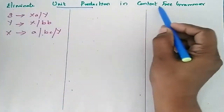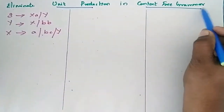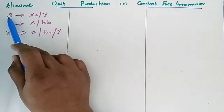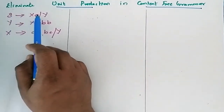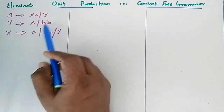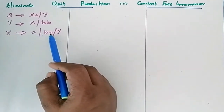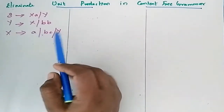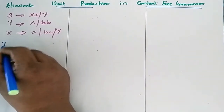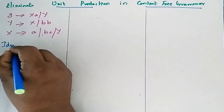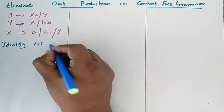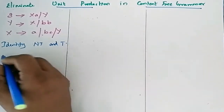Eliminate unit production in context-free grammar where the production rule is: S determines XA or Y, Y determines X or BB, X determines A or BC or Y. Now go for identifying — first identify non-terminals and terminals.